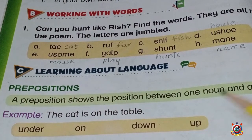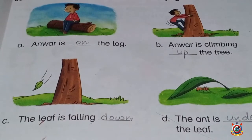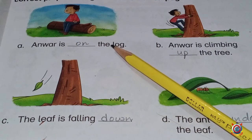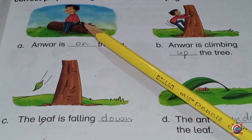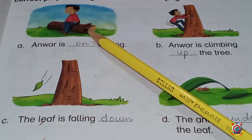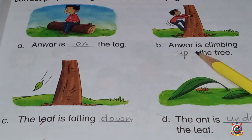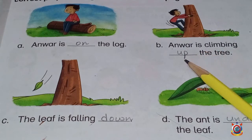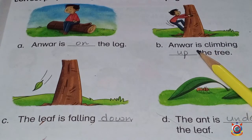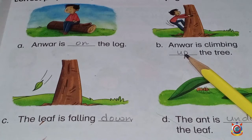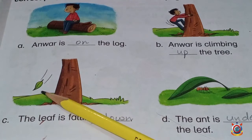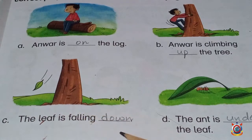We will use them in the blanks. Part A: 'Anwar is ___ the log' — the answer is 'on'; Anwar is on the log. Part B: 'Anwar is climbing ___ the tree' — the answer is 'up'; he is climbing up the tree. Part C: 'The leaf is falling ___' — the answer is 'down'; the leaf is falling down.